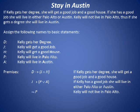not P. That is, Kelly will not live in Palo Alto. The conclusion to be drawn is D implies A. That is, if Kelly gets a degree, she will live in Austin.